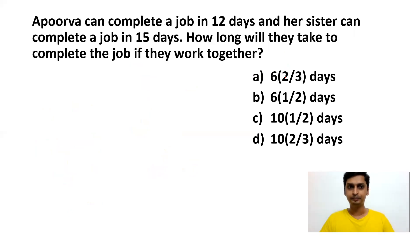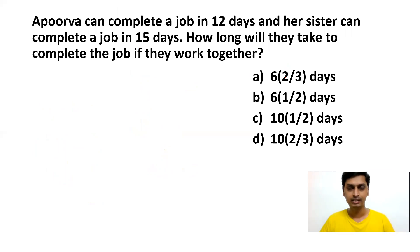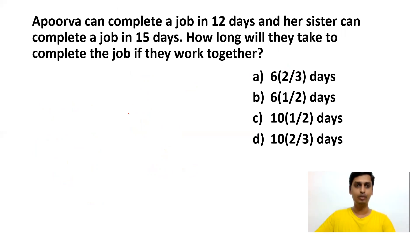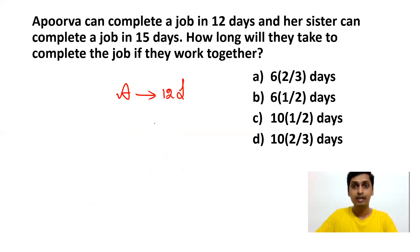Moving to the next question. Apoorva can complete a job in 12 days and her sister can complete the same job in 15 days. How long will they take to complete the job if they work together? This question is based on time and work — you can expect at least 2 questions from time and work. Apoorva (A) completes the job in 12 days, and her sister completes it in 15 days.